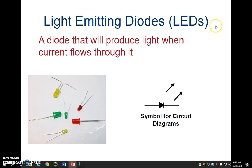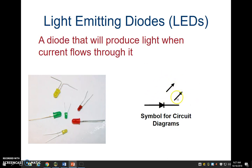Last but not least, our last component: light emitting diodes — go ahead and write that down. This is basically just a diode that lights up. Write down 'a diode that lights up,' or use the full definition if you want. The symbol is exactly the same as a diode, but with two additional arrows coming off, pointing diagonally up and to the right — those arrows stand for light. This is the LED, or light emitting diode, symbol. Make sure you have the definition and symbol written down.